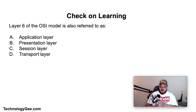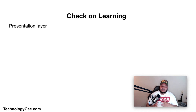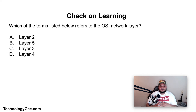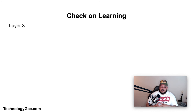Now it's time for some check-on-learning. First question: Layer six of the OSI model is also referred to as what? Is it the application layer, the presentation layer, the session layer, or the transport layer? The correct answer is the presentation layer. Next question: Which of the terms listed below refers to the OSI network layer — is it layer two, five, three, or four? The correct answer is layer three is the network layer of the OSI model.